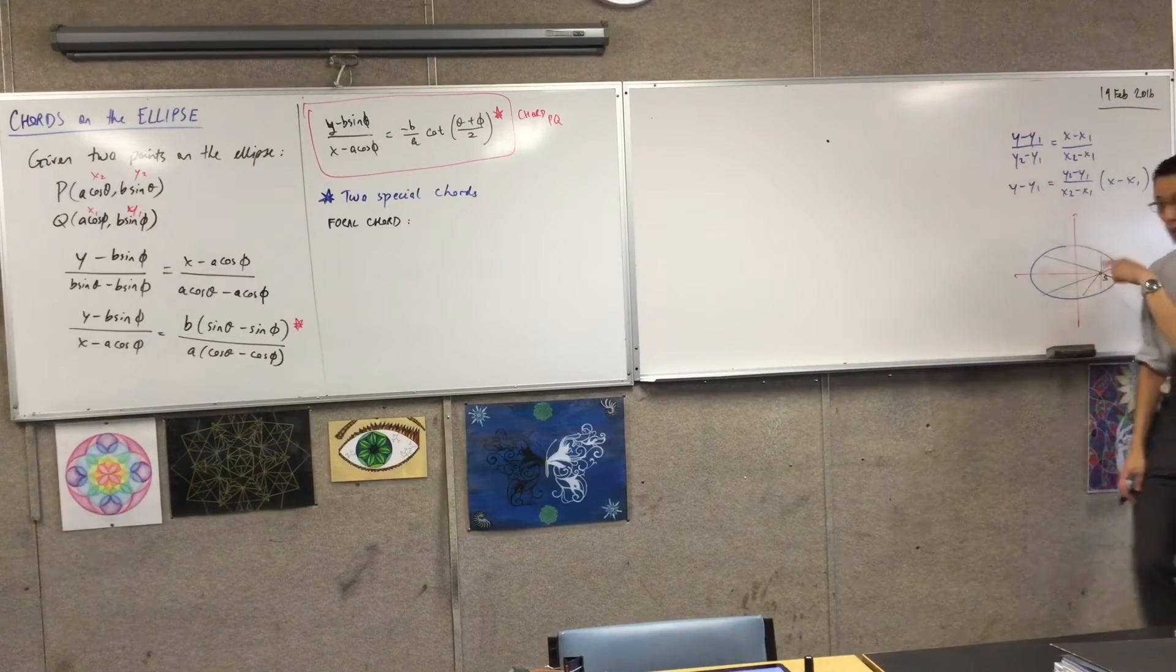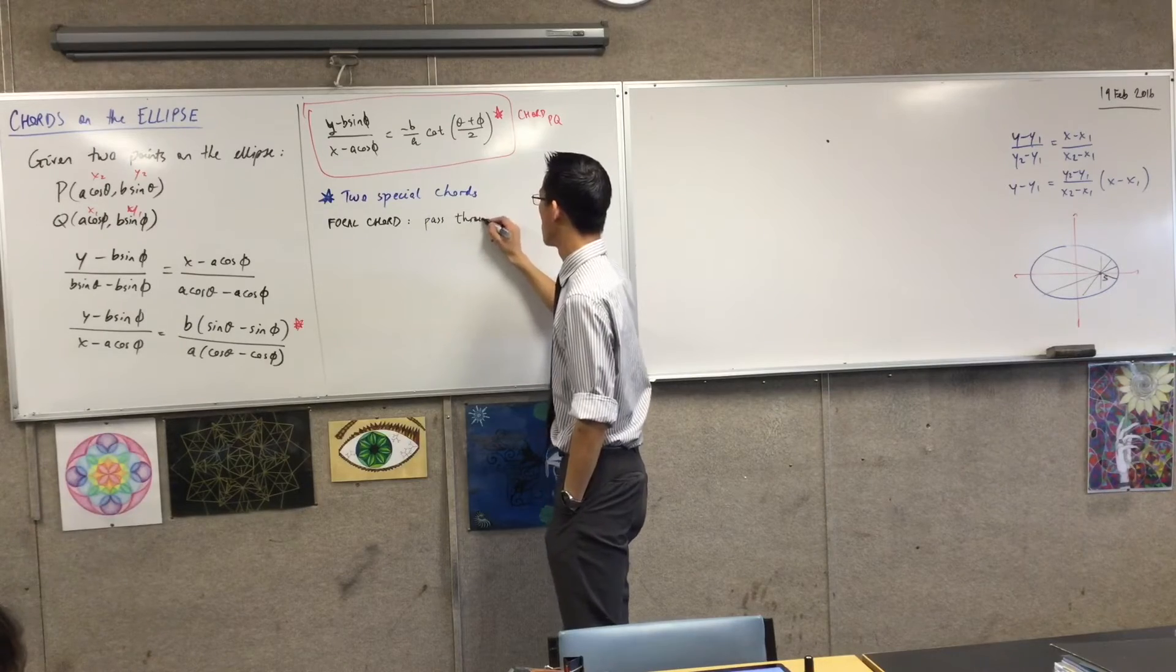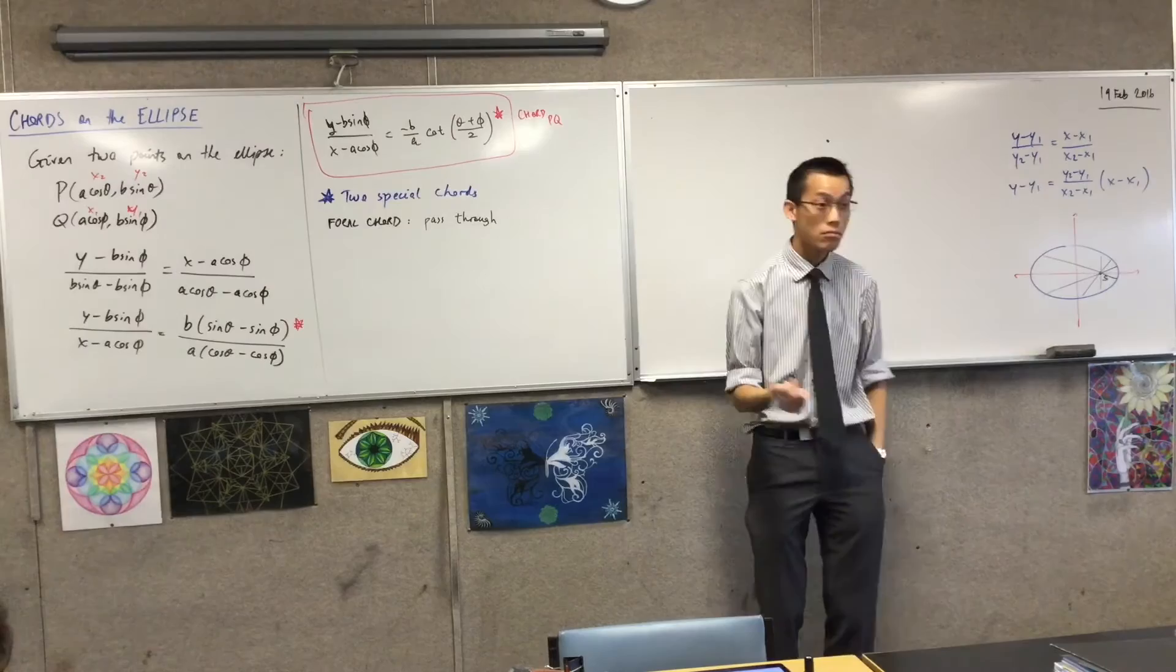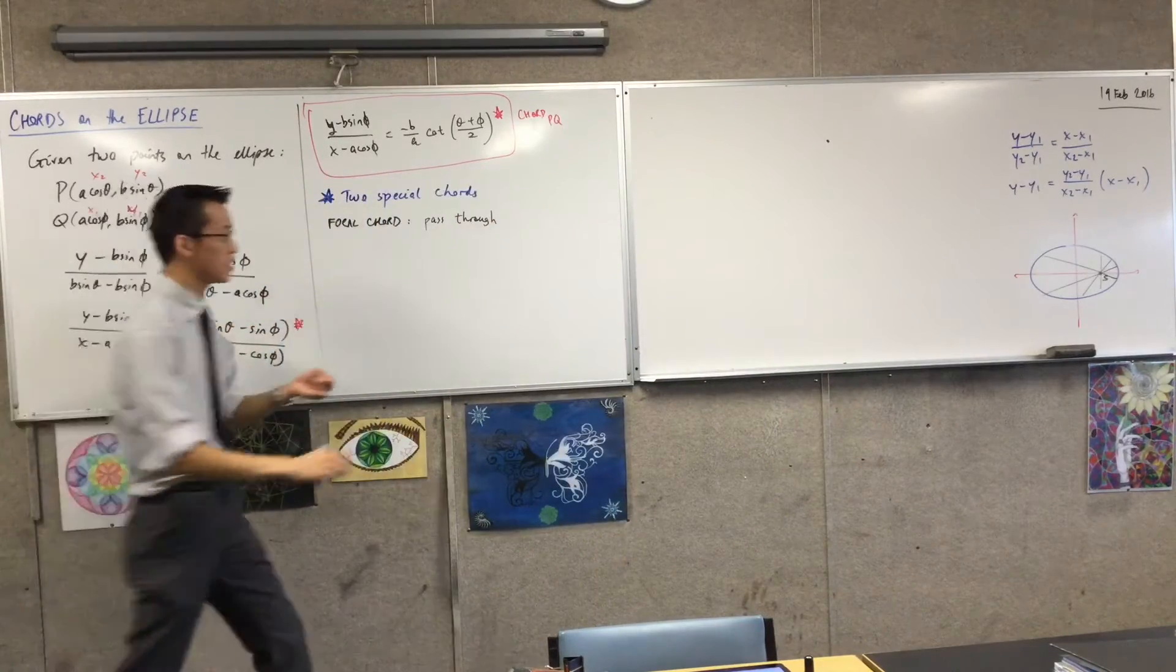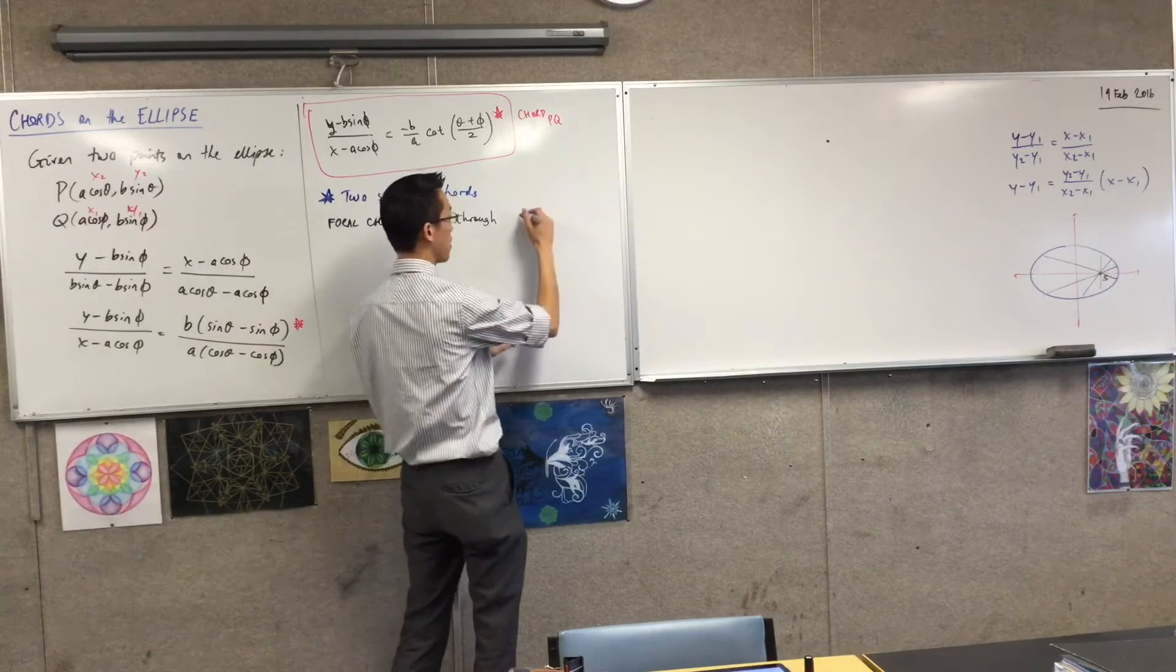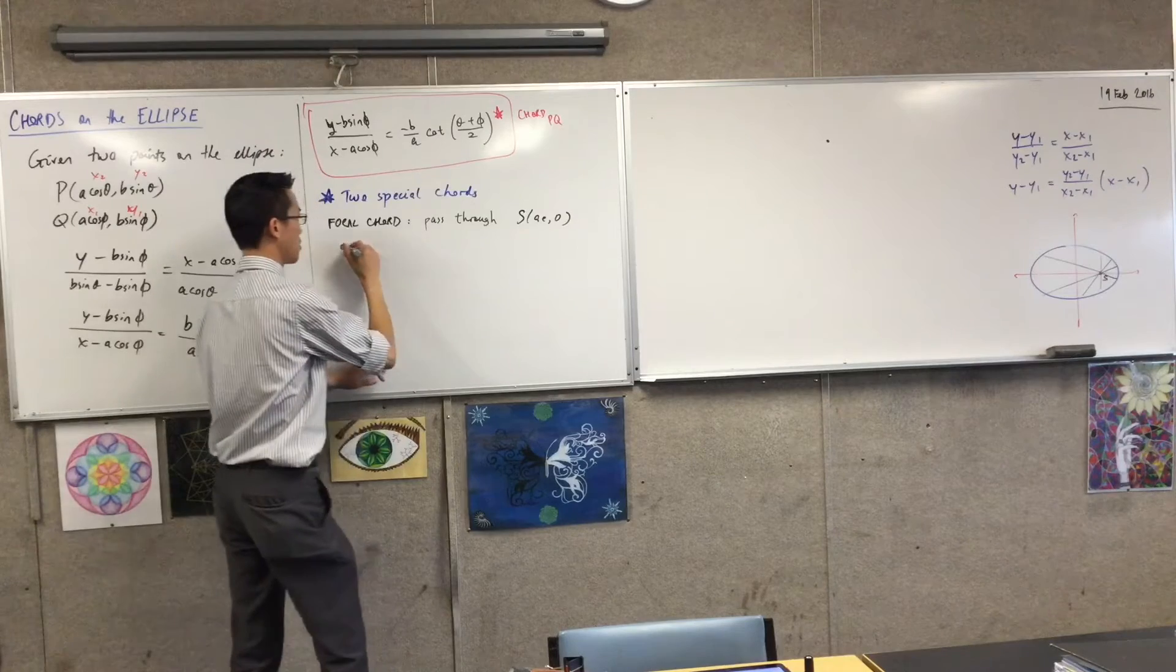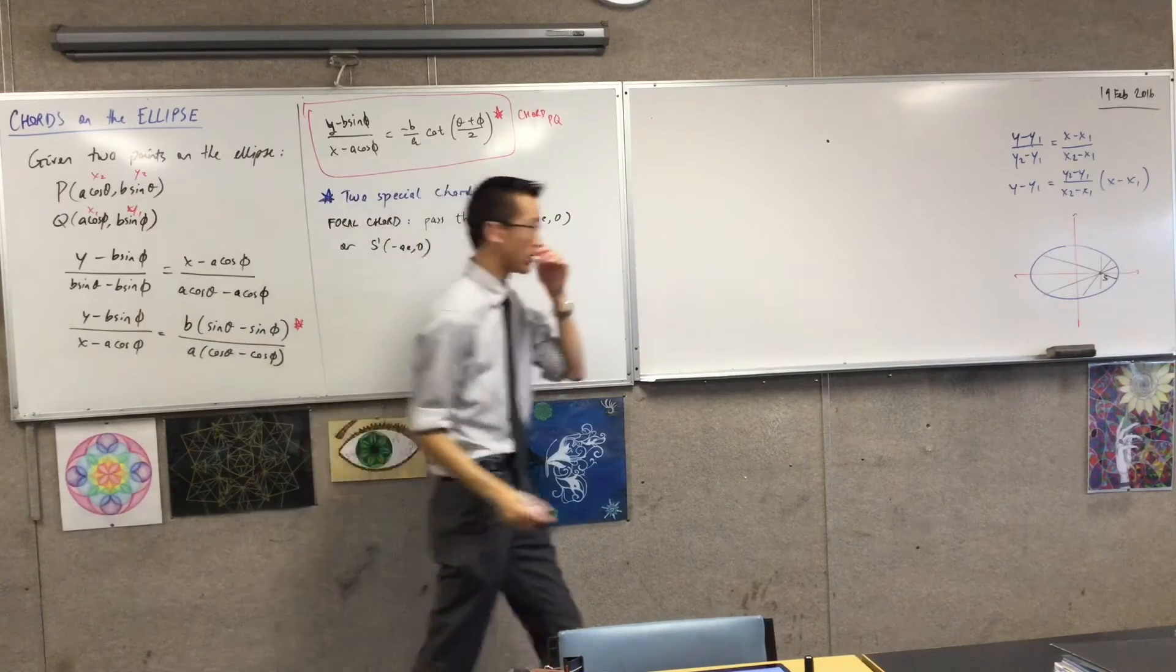Now, what are the coordinates of the focus again? In terms of the proportions and the eccentricity, it's just going to be ae comma zero, right? So there's the first one. Or, it's going to pass through S dash, which is negative ae comma zero, okay?